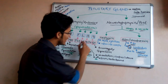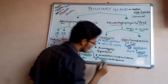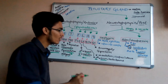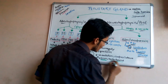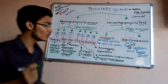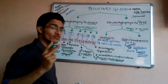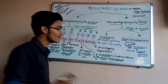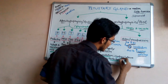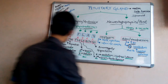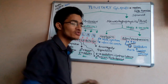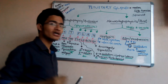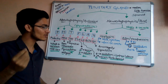L stands for LH, the luteinizing hormone. In males, LH is also known as ICSH — the interstitial cell-stimulating hormone — which helps in the secretion of testosterone, the male sex hormone. In females, it has two functions: ovulation, which is the release of the ovum, and the maintenance of the corpus luteum.